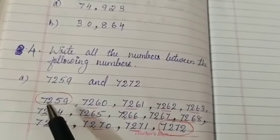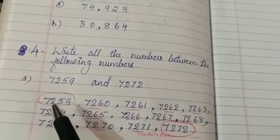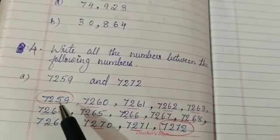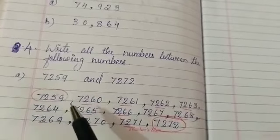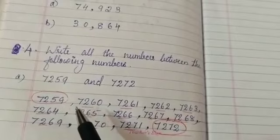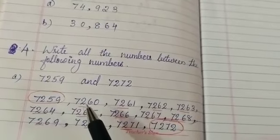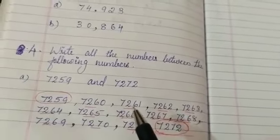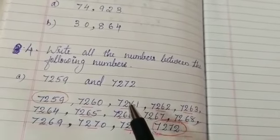So, what is the next number? One stands hundred thousand. So, 7259 is the given number. So, what is the next number? 7200, after 59, what is the next number? 60. So, 7261. Next number is 7261.